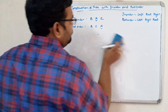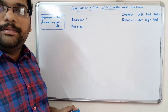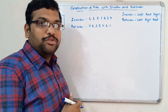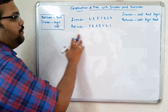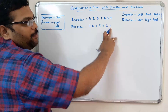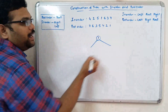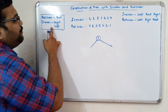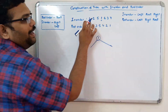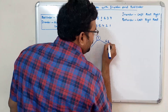Let us take another example with an inorder and a postorder. For the root node, we go with the postorder first — in postorder, last element is the root. So 1 is the root here. Now we find the left and right chains using the inorder. Looking at inorder, 1 is the root. Elements on the left are the left subtree: 4, 2, 5. Elements on the right are the right subtree: 6, 3, 7.